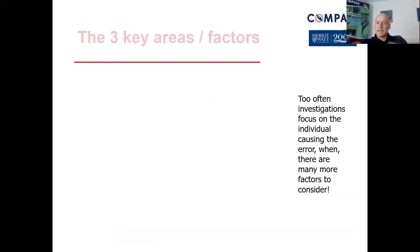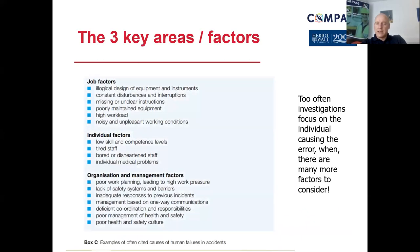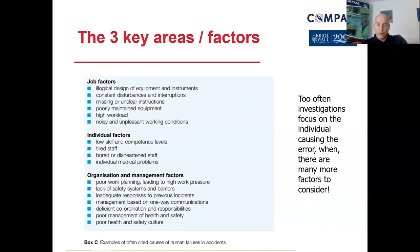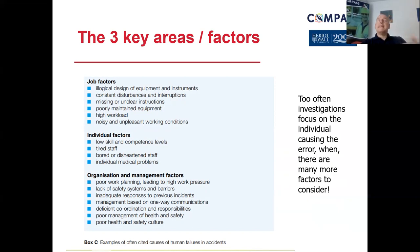There's a link you can look into from that presentation. The key factors come together in three loops, and the ideal position is the three loops in the middle showing a good balance in all areas. Too often we investigate accidents and focus on the individual causing the error — those factors of low skill and competence, tired, bored, or distracted, and medical problems. But look at the five or six job factors and six or seven organisational management factors — they make it easy to conduct an in-depth investigation by considering all three.